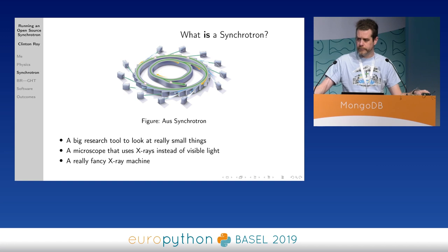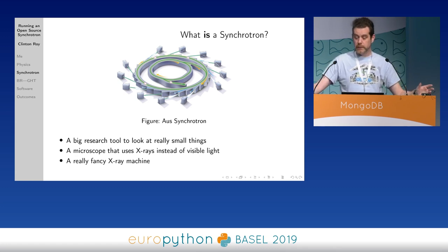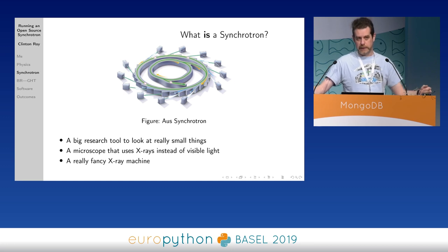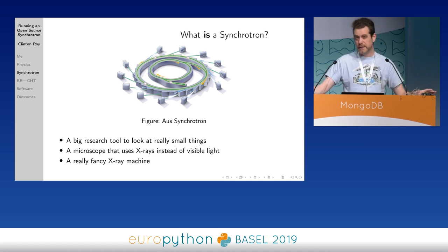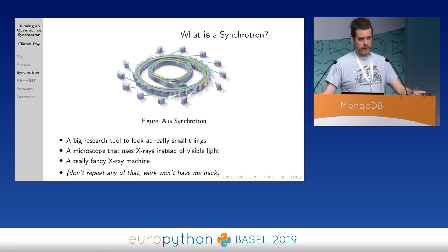The Synchrotron, in ways I can get across on a tour, is a very big research tool to look at very small things. You can think of it like a microscope that uses X-rays instead of visible light. X-rays and visible light are on the same spectrum - they are kind of the same thing, but matter reacts differently to X-rays than to light. It's a really fancy X-ray machine. If a very fancy X-ray machine and a very fancy microscope had a child, it might be a synchrotron - but don't repeat that too loudly.